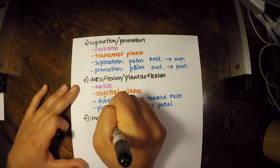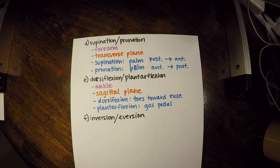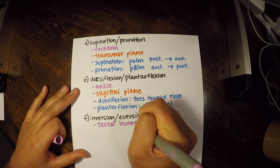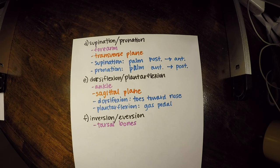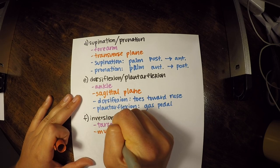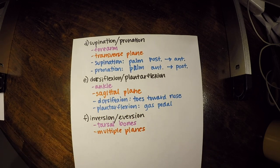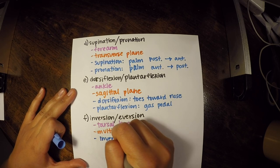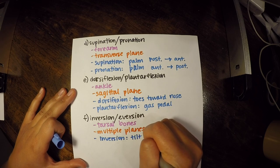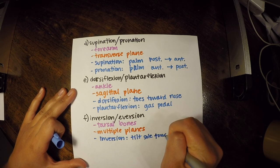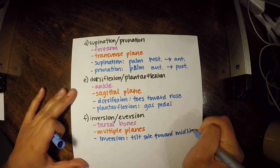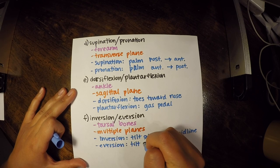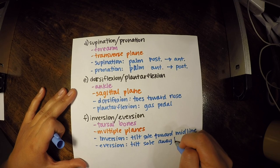The last movement is inversion and eversion, which occurs only at the tarsal bones and takes place in multiple planes. For inversion, tilt the sole of your foot toward midline. For eversion, tilt the sole away from midline.